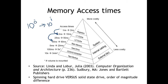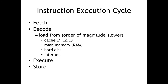Registers are accessed at the same clock speed as the CPU, so they execute at full CPU speed. As we move away from registers to cache, then to main memory, then to hard drive, access becomes more expensive and costly. Even within hard drives, there's an order of magnitude difference between solid-state drives and traditional spinning disks. Most modern systems are now shipping with solid-state drives.